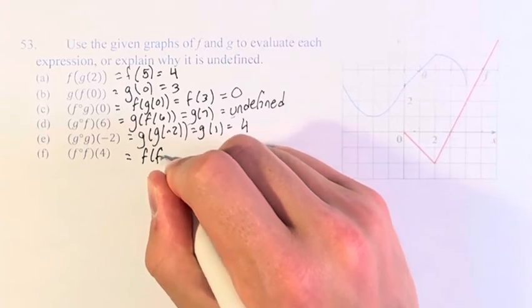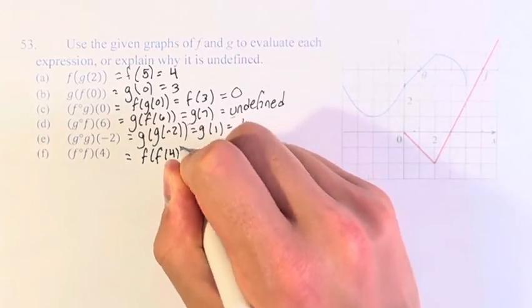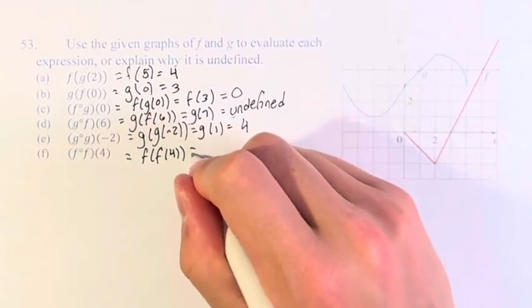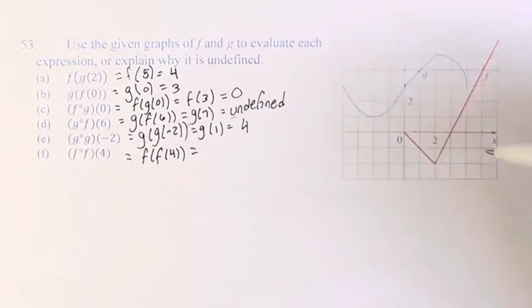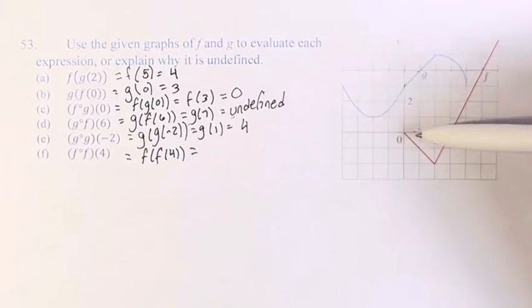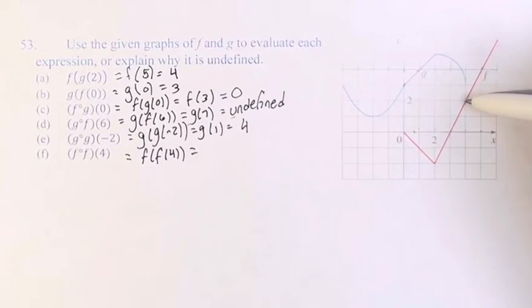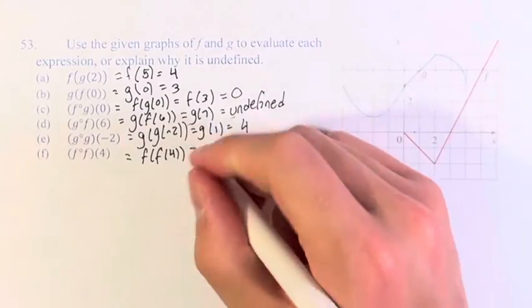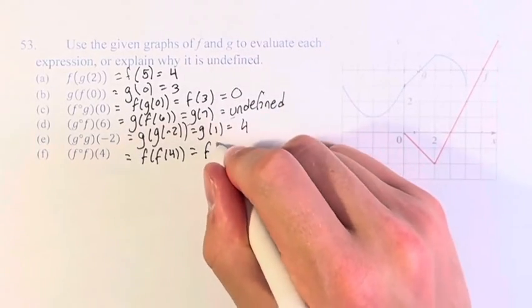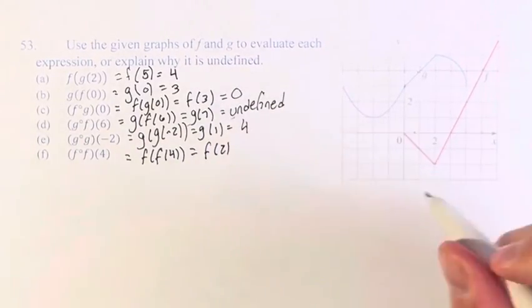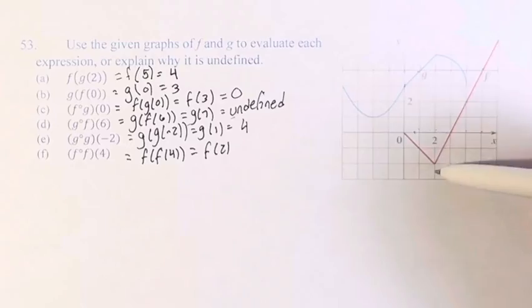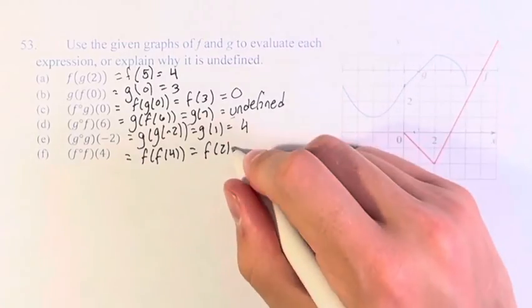And finally, f of f of 4. f of 4 — going to x equals 4 — is 2. So this becomes f of 2, which is negative 2. So f of f of 4 equals negative 2.